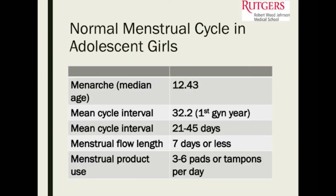The average age of menarche is about 12 to 12.4 years. In the first year after a girl gets her period, cycles are about 32 days in length. Generally they'll fall between 21 to 45 days. Menstrual flow should be seven days or less, and normal is about three to six pads or tampons per day. A good way to assess flow is to ask how often they change — changing every one to two hours over several days is significant and usually not normal.